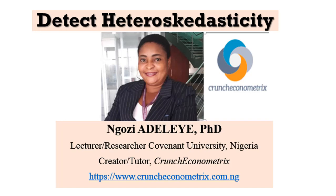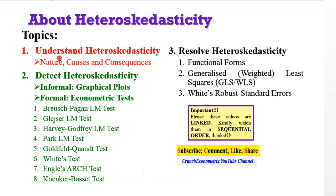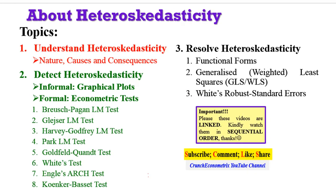Thank you for staying with me on Crunch Econometrics, still on the Heteroscedasticity Series. In this video, we will consider ways of detecting the problem of heteroscedasticity. In the previous video, we understood the nature, causes, and consequences of the problem. Now in this video, we are going to take a look at informal and formal ways by which we can detect the problem of heteroscedasticity in any model.